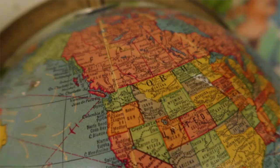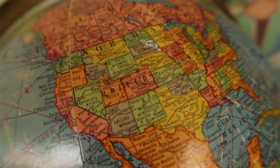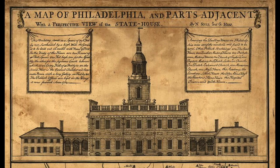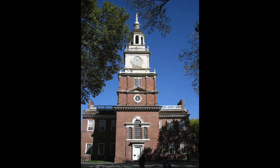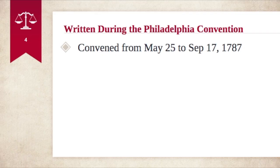I want to start off by talking about where and when the Constitution was written, and also who are some of the main people involved in the drafting and signing. The Constitution was written during the Philadelphia Convention in Philadelphia, Pennsylvania, in the Assembly Room of the Pennsylvania State House, which is now known as Independence Hall. The Constitutional Convention convened from May 25th to September 17th, 1787, and it was signed on September 17th, 1787.